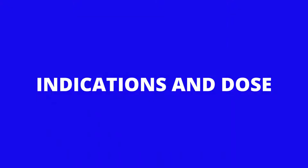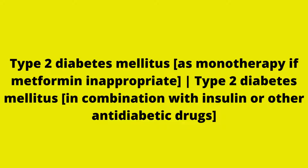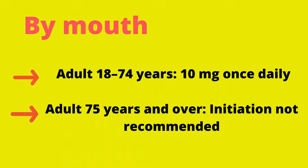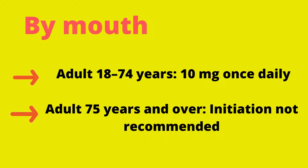Indications and Dose: This drug is indicated in type 2 diabetes mellitus when metformin is inappropriate, as monotherapy or used in combination with insulin or other antidiabetic drugs. In adults aged 18 to 74 years, the dose is 10 mg once daily. For adults 75 years and over, initiation is not recommended.